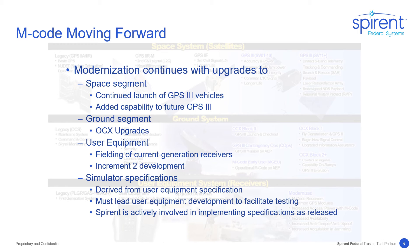Improvements are being made to the ground segment for better supporting the constellation. The current generation of receivers is being implemented, and development of the next generation of receivers is underway. The specifications that guide simulator development are distilled from user equipment specifications, keeping SPIRINT very active and working to implement simulation capabilities in time to meet receiver development needs.